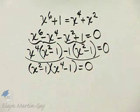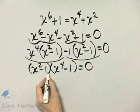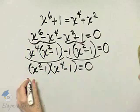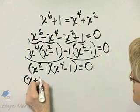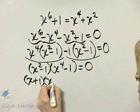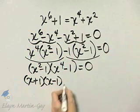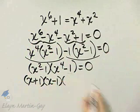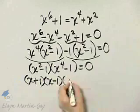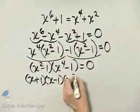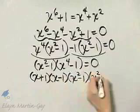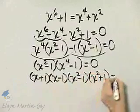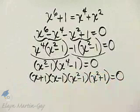So far, I've factored, but I haven't factored completely, so let's keep factoring. This is the difference of two squares. So this factors as x plus 1 times x minus 1. Then, this is the difference of two squares. This factors as x squared minus 1 times x squared plus 1 is equal to 0.